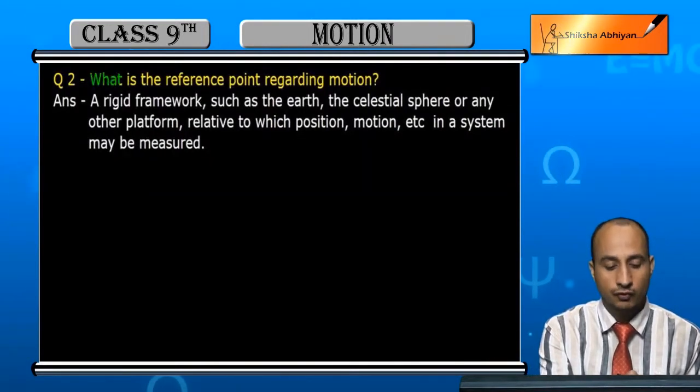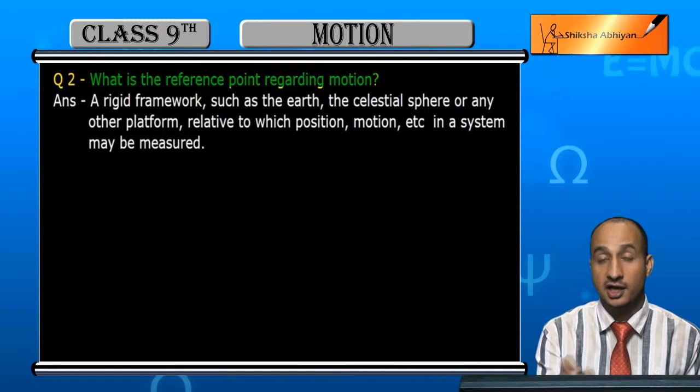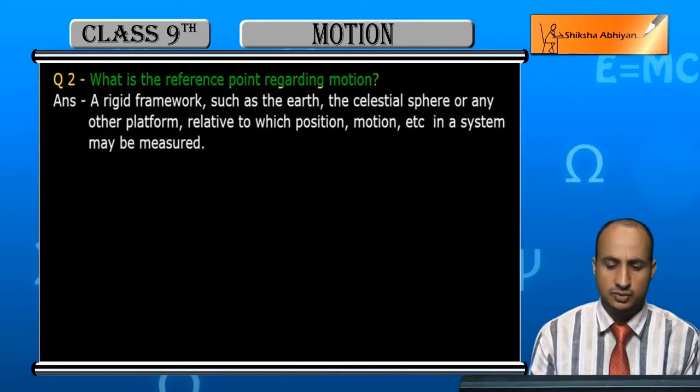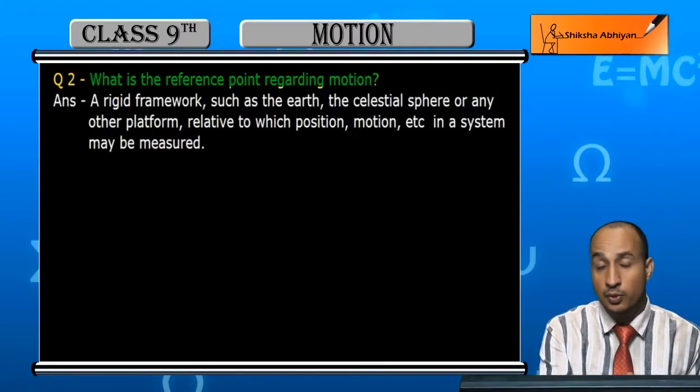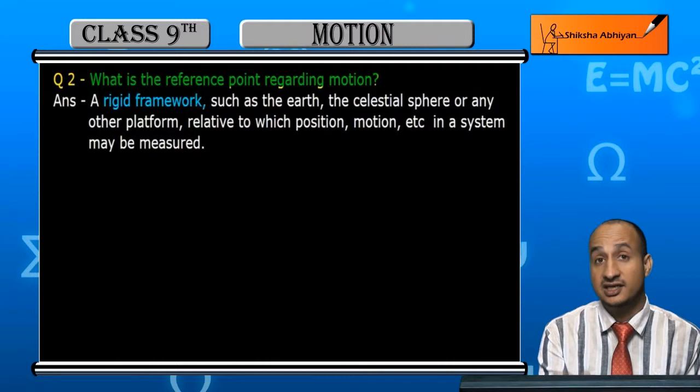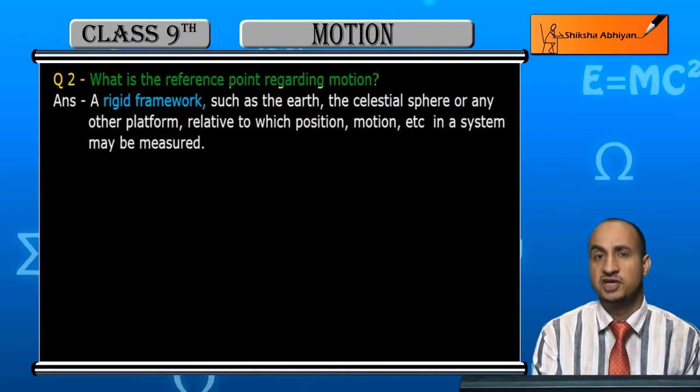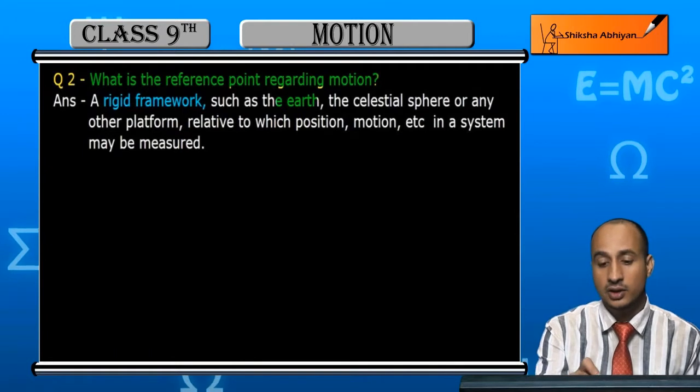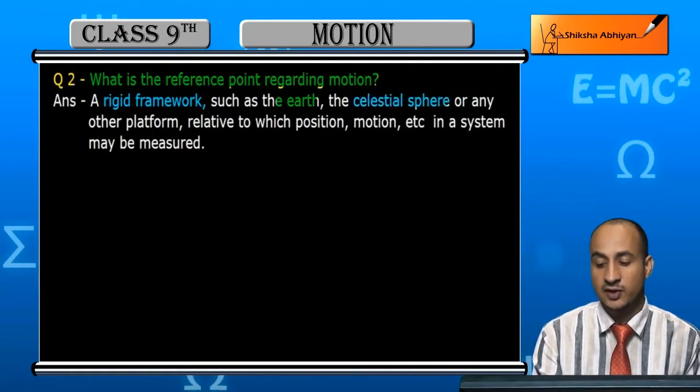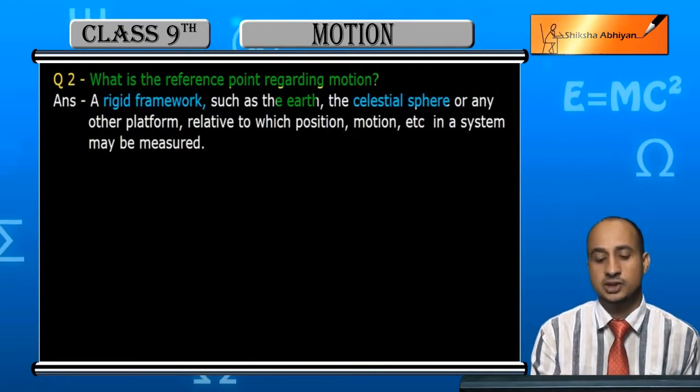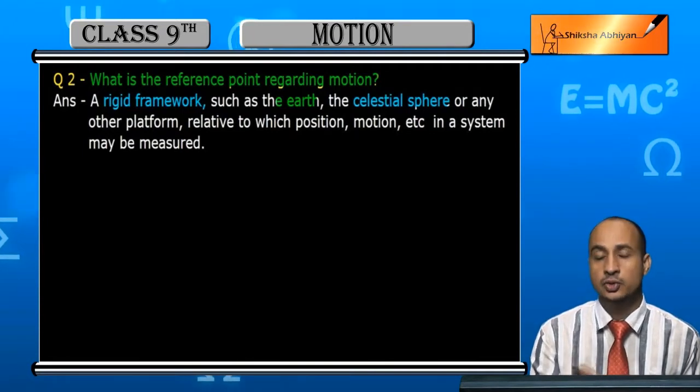Question 2 is: what is the reference point regarding motion? The reference point is a rigid framework. What is the rigid framework? I can give you some examples such as Earth, celestial sphere, or another sphere like moon or sun. These reference points are all rigid.